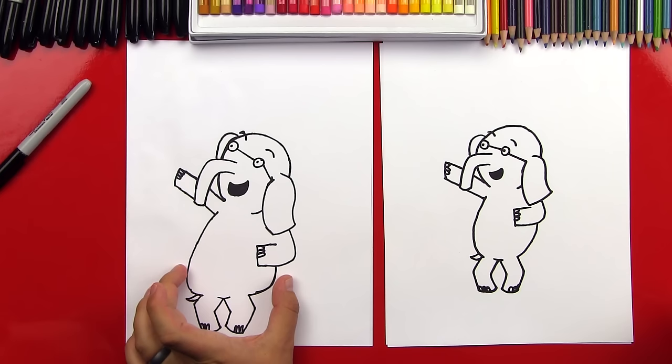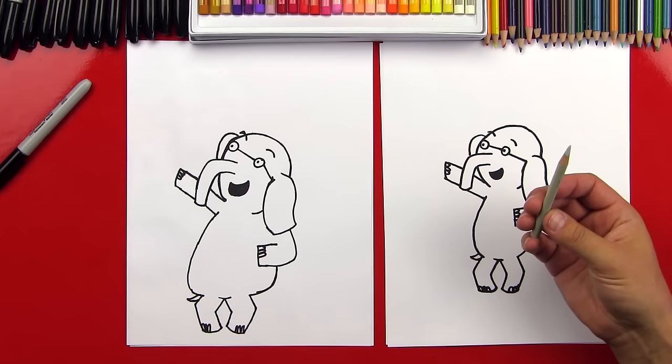Okay, we need to color him. We're just going to use one color. We're going to use gray. You ready to fast forward? Yeah. Let's do it right now.